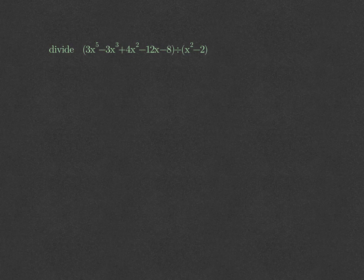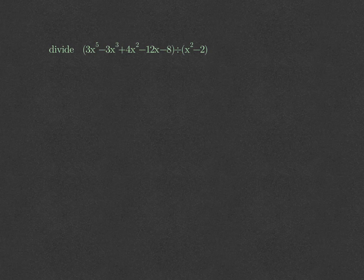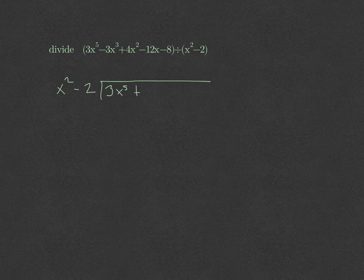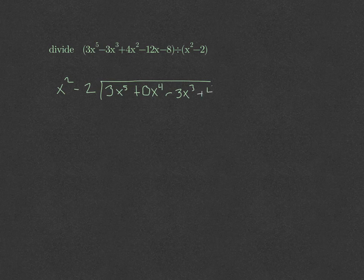Let's divide 3x to the fifth minus 3x cubed plus 4x squared minus 12x minus 8, divided by x squared minus 2. To start, we set up the divisor x squared minus 2 dividing into the dividend. The trickiest part is including the placeholder 0x to the fourth, since there's no x to the fourth term. So we write: 3x to the fifth plus 0x to the fourth minus 3x cubed plus 4x squared minus 12x minus 8.